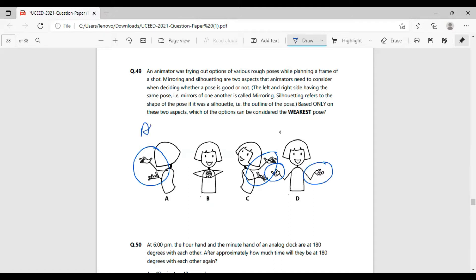But when it comes to part B, part B is the least expressive because both of its hands are closed in. And therefore, we can say part B is the weakest pose here.